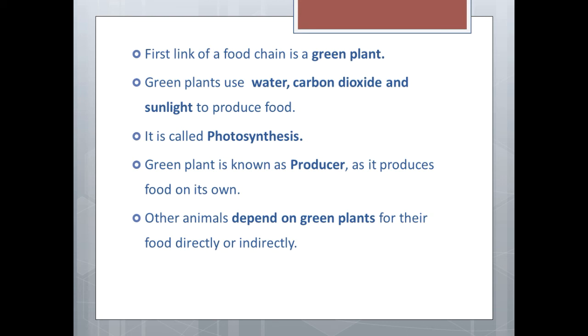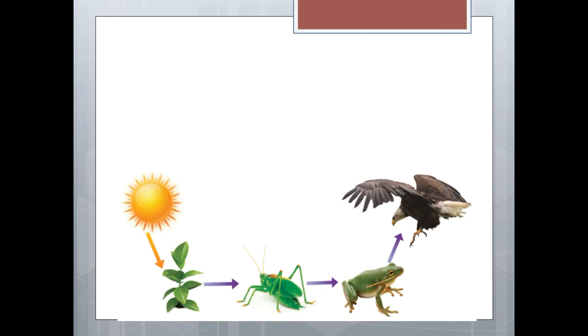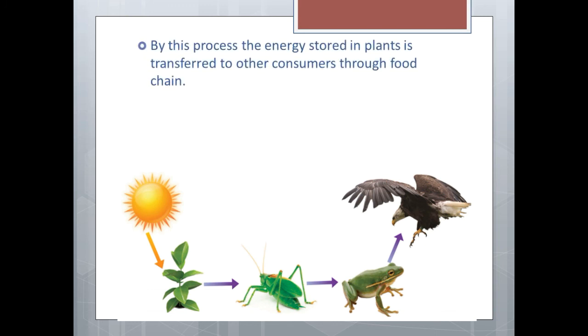Other animals depend on these green plants for their food directly or indirectly. Like herbivores depend on green plants directly for their food and carnivores depend on green plants indirectly for their food. Those animals are known as consumers. If you clearly observe these interrelationships, you will understand by this process the energy stored in plants is transferred to other consumers through the food chain.